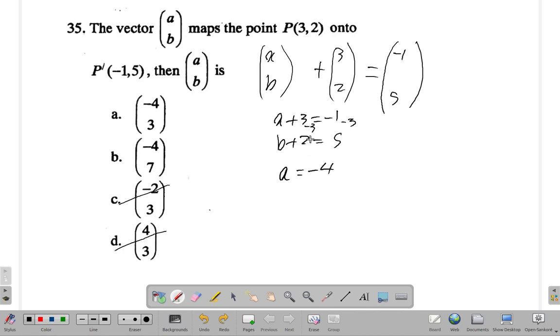Now what about b? You say b+2, if you subtract 2 here and subtract 2 here, 2-2 is 0, so you have b alone equal 5-2 is 3. So what you have is (-4, 3). So AB is the vector a is -4 and b is 3, so it would be a for the answer.